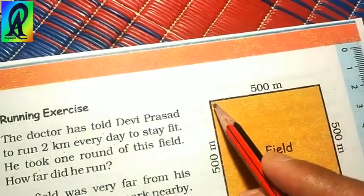Next, the question is: how far did he run if Devi Prasad took one round of this field? Let Devi Prasad start to run from this point of this ground. First of all he runs 500, next 500, then 500, and finally 500. Now how far did he run? So first of all we find out the boundary of this field. So here the boundary of this field is 500, 500, 500, 500. So add all of these: 500, next 500, and finally 500.